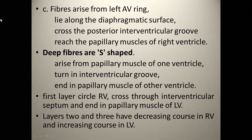Next, the third group of fibres arises from the left AV ring, then passes along the diaphragmatic surface, and the posterior ventricular group is reached, finally reaching the right ventricle and papillary muscles. Deep fibres arise from the papillary muscles of one ventricle, then turn in the interventricular group, and finally reach the papillary muscles of the other ventricle.